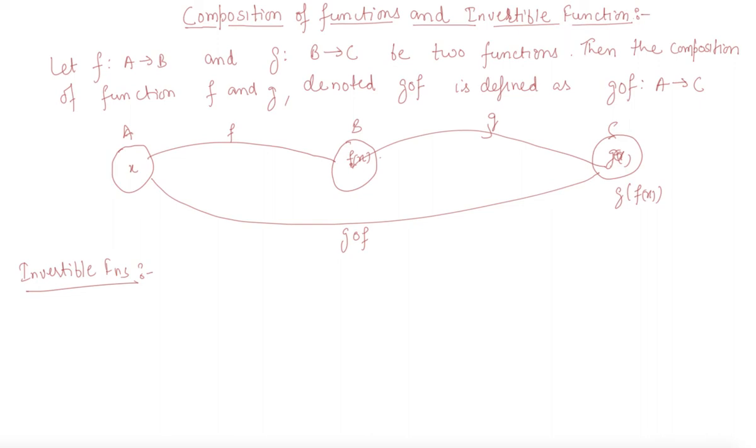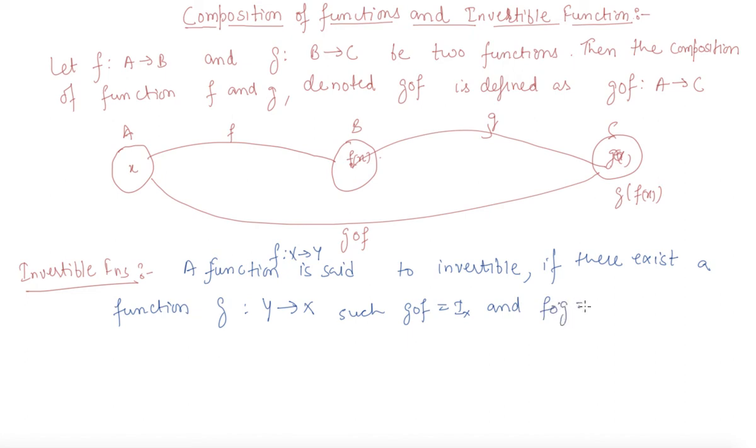A function f from X to Y is said to be invertible if there exists a function g from Y to X such that g∘f is IX and f∘g is IY.